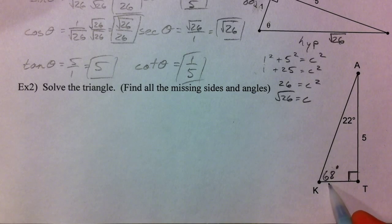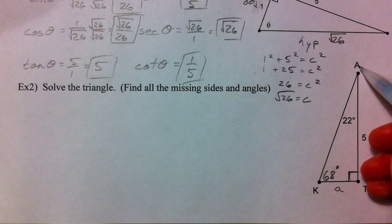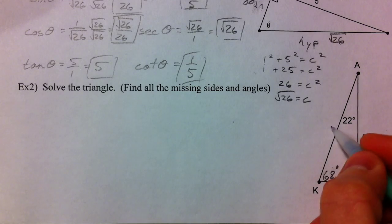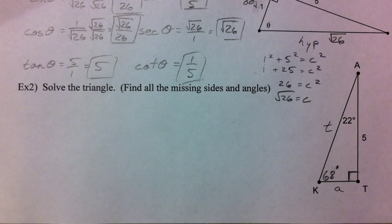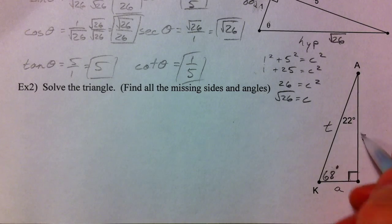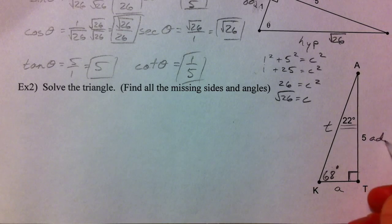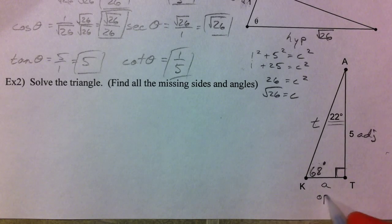Alright, so we found our missing angle 68, and now we can find this side. Let's call it A because it's across from capital A, and let's call this side T because it's across from capital T. So lower cases for the side lengths, capitals for the actual angles. Lots of different ways we can go with this. Now, so we have, let's say we have our 22, 5 is the adjacent side to our 22, and A is the opposite side.